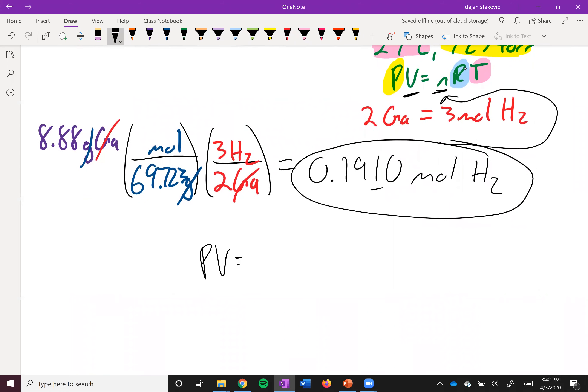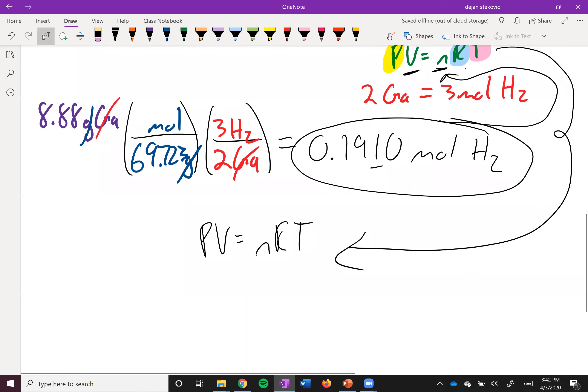Again, we want to solve for V. So let's reorganize this. Divide both sides by P. NRT over P. And then think about what all of these units are going to be.